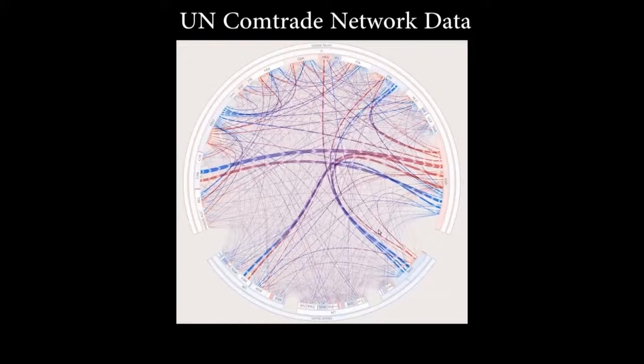All countries and classifications are depicted as nodes on concentric circles, whereas the adjacent links between two states are represented as bands.